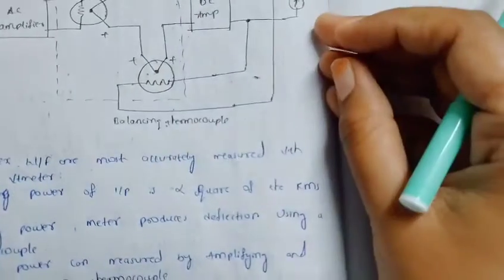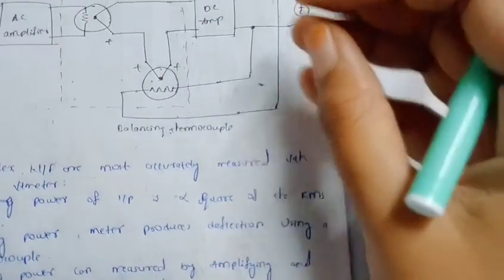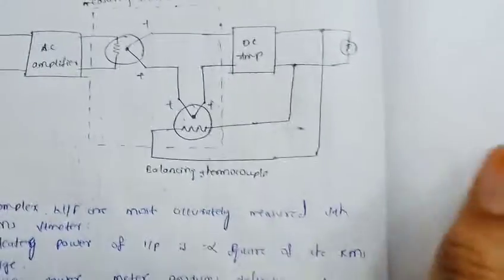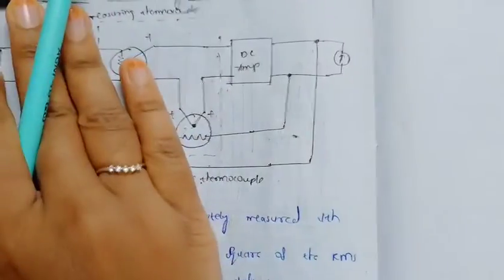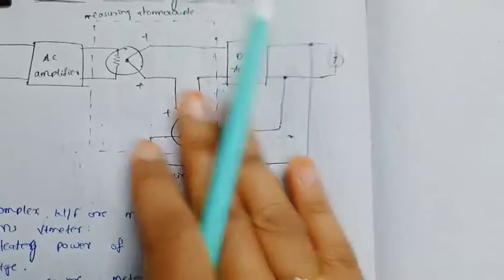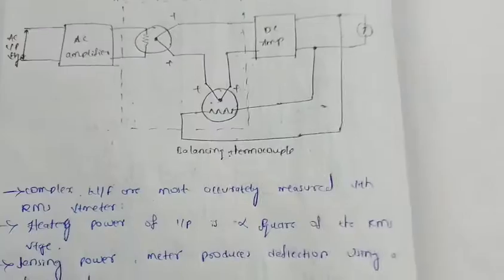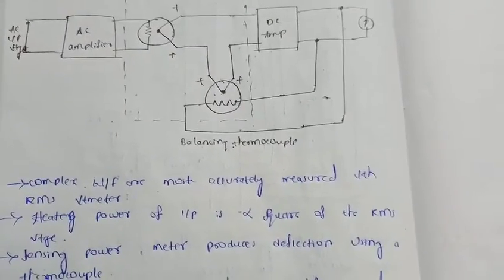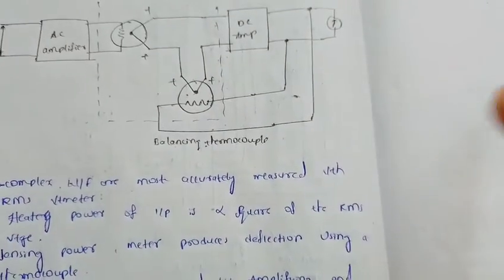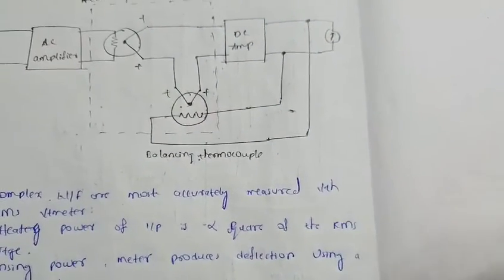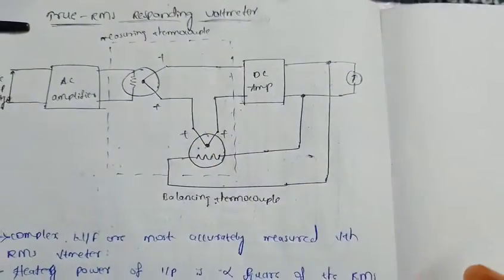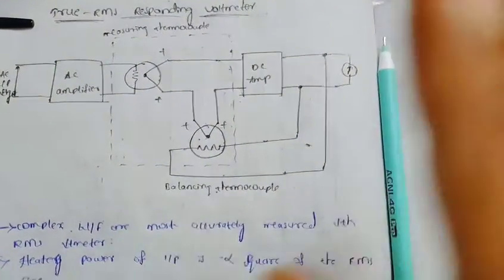The output thermocouple output is the same as the input thermocouple. The current is equal to the feedback thermocouple DC current, which is equal to the AC current. The DC current is directly proportional to the RMS value of the input voltage.